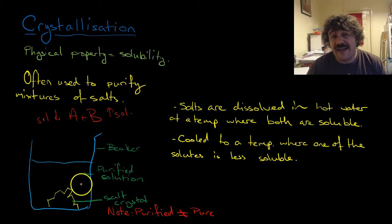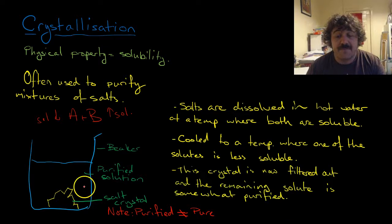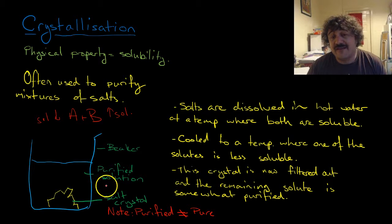Salt A will form a crystal. This crystal is then filtered out, and the remaining solute is somewhat purified. In fact, they're both purified—you've got purified A in the crystal and purified B in the solution.